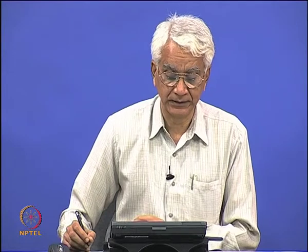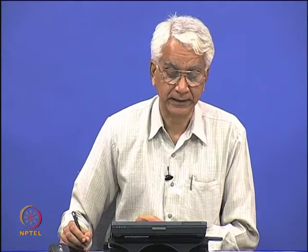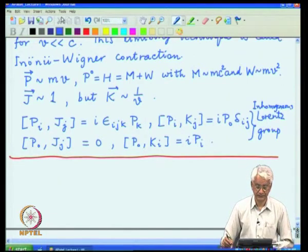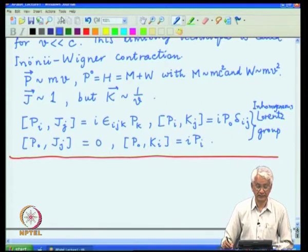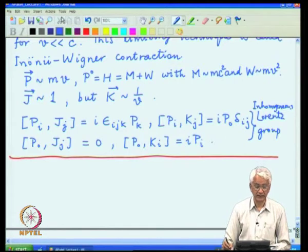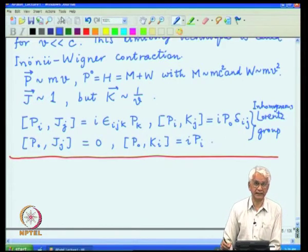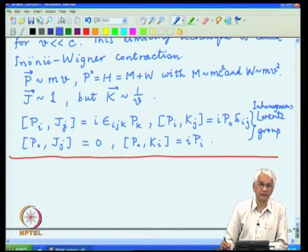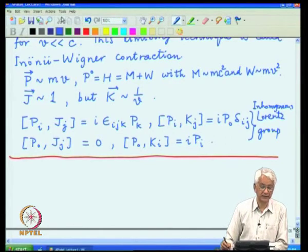In the previous lecture, I described how one can obtain the Galilean group algebra from the Poincaré group by taking the limit that the magnitude of velocity is much smaller than the speed of light. That gives rise to certain scaling of the various generators, and one can keep the leading order terms in all the computation rules to get the simplified algebra. This technique is known as Inonu-Wigner contraction.